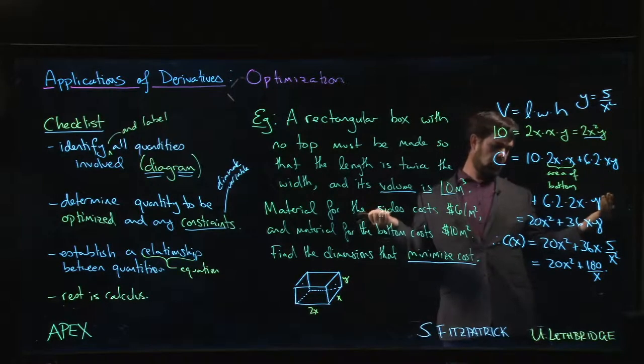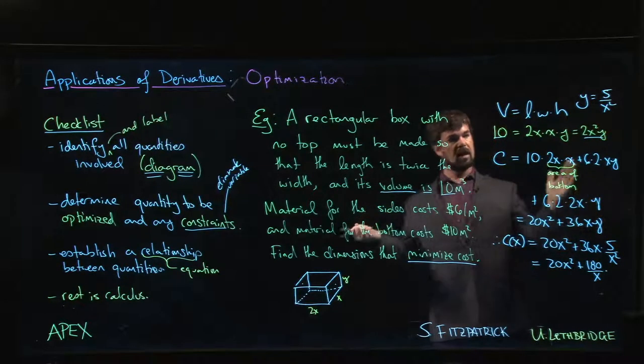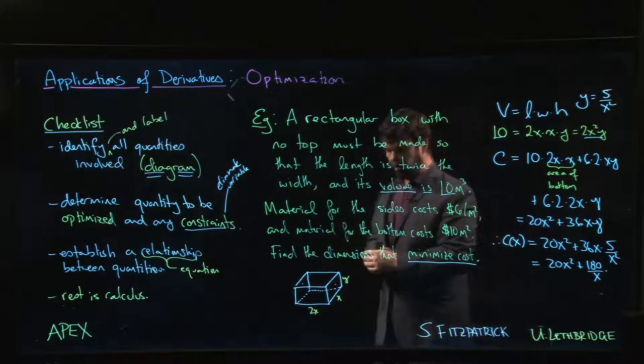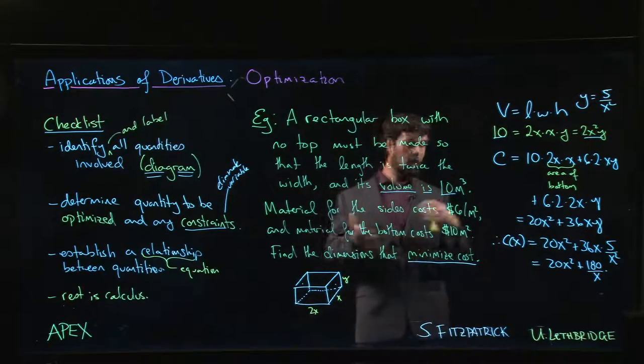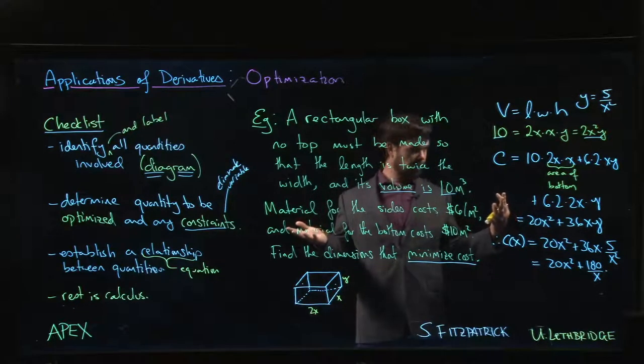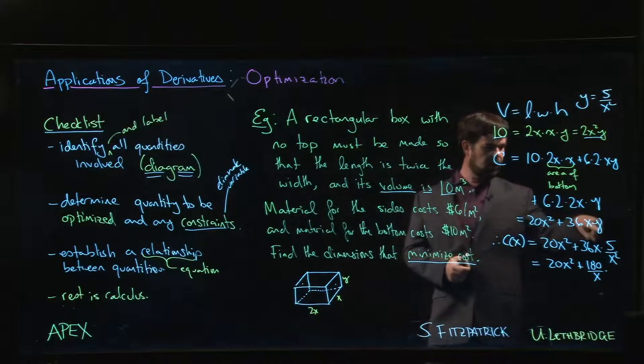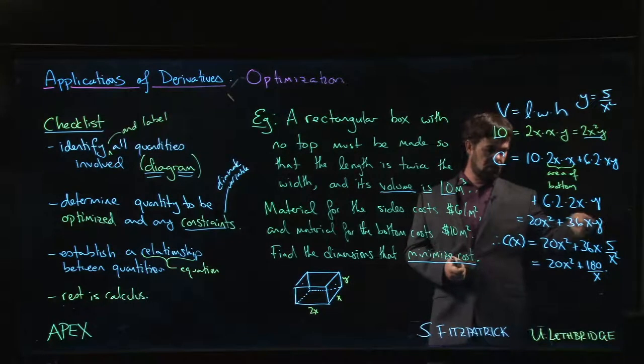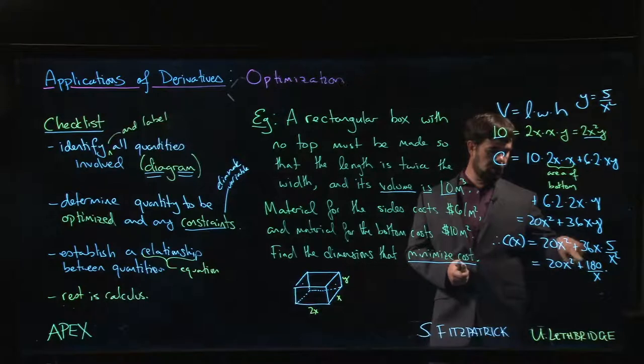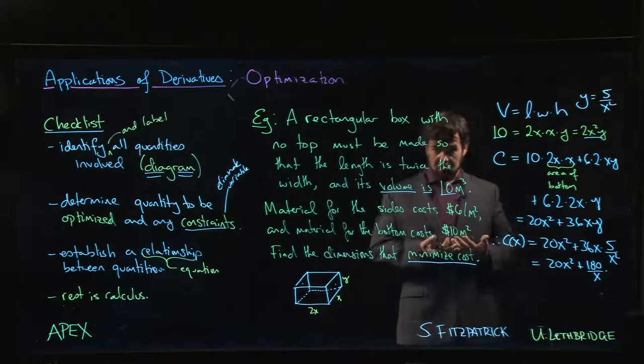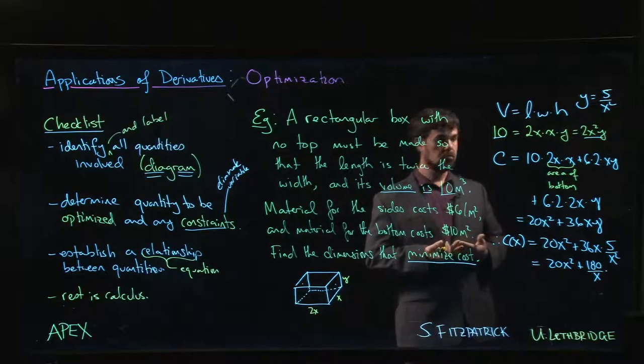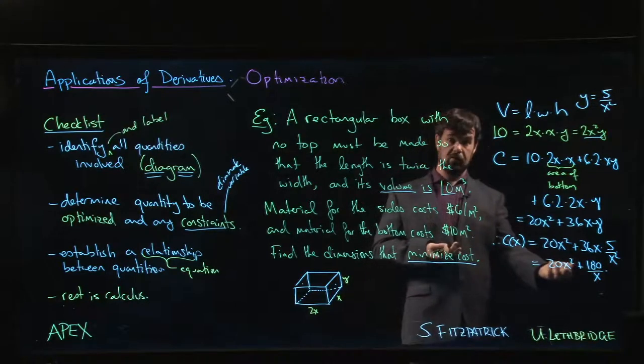But x in principle could get as close to zero as we want. I can get x close to zero—y is just going to have to be really big to compensate. But we can see either looking here, if y is really big here, that's going to give you a big cost. But we'll see here if x is close to zero, this quantity is going to blow up. So we're not going to minimize cost by making x really small. We're also not going to minimize cost by making x really big.